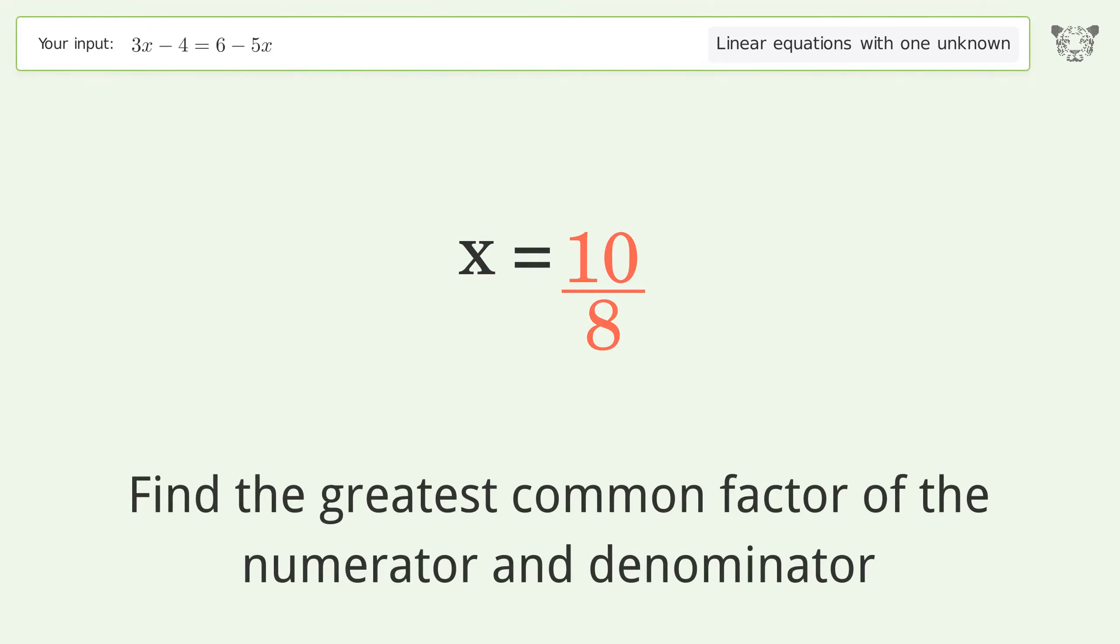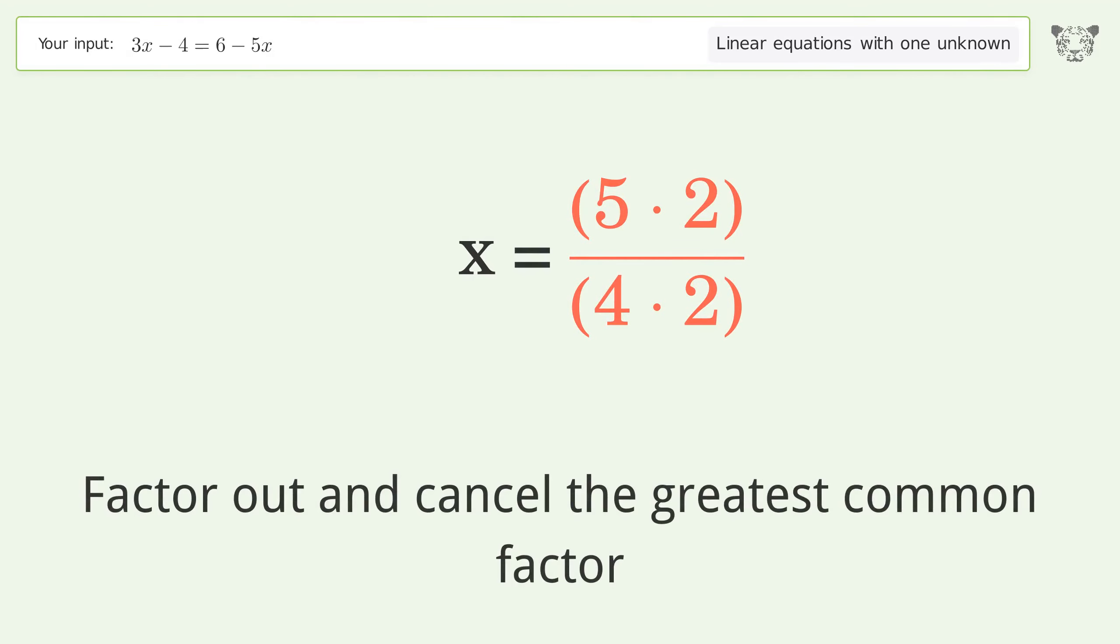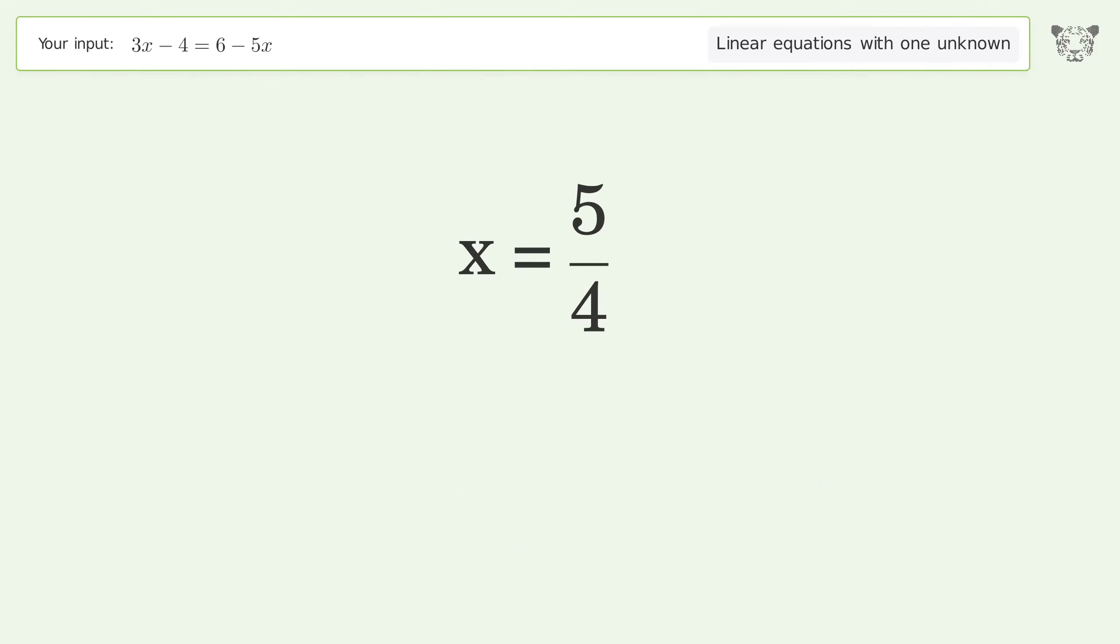Find the greatest common factor of the numerator and denominator. Factor out and cancel the greatest common factor. And so the final result is x equals 5 over 4.